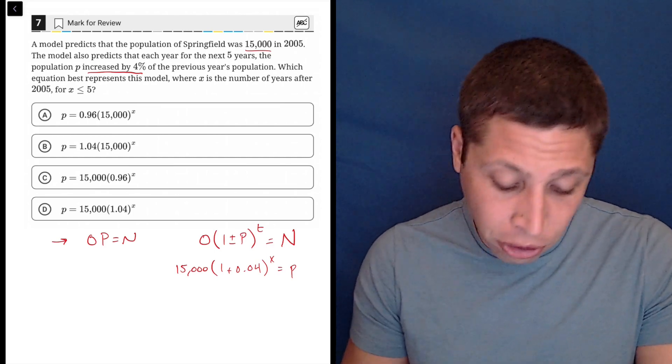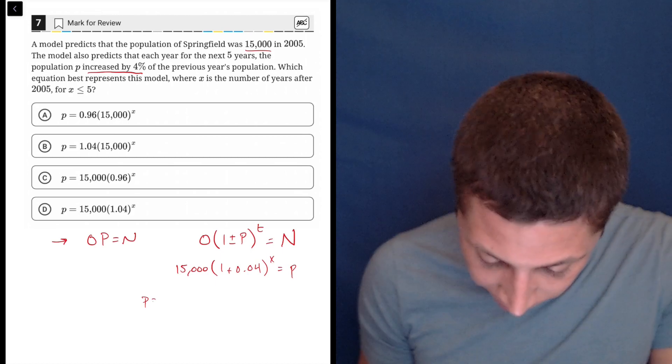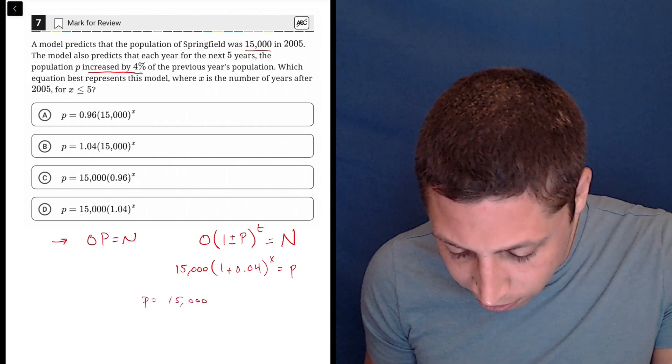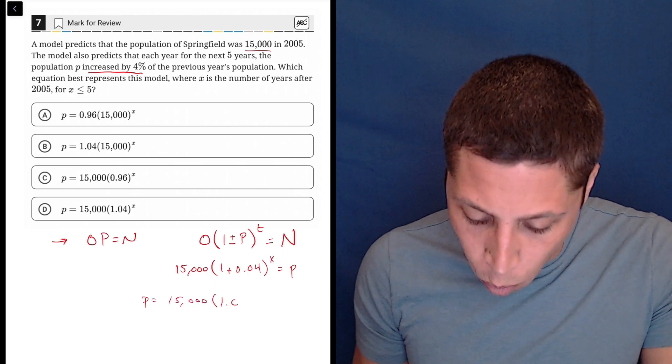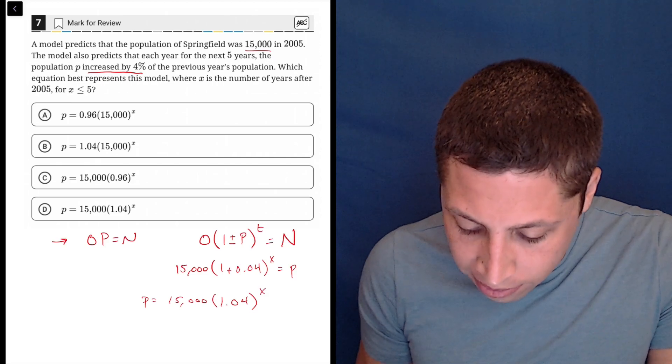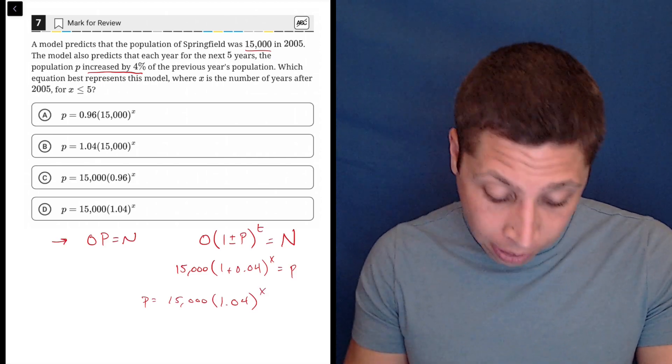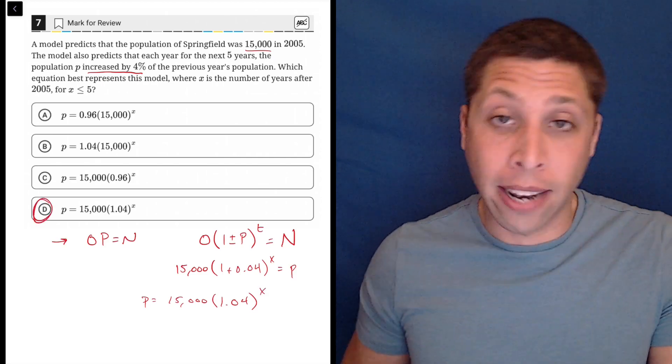Now I just need to clean this up slightly. They put the p in the front, so we might as well do that as well. 15,000 is still outside. And then 1.04 is the amount in the parentheses. And sure enough, that is choice D. And that is the answer.